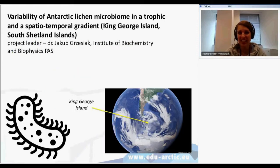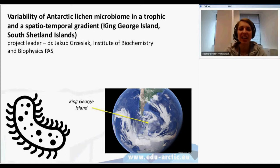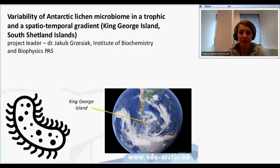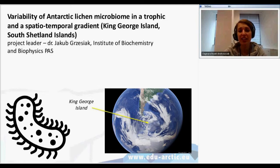The first one is the name of the scientific project that is still being carried out in South Shetland Islands. It is the archipelago where King George Island is located. It is the Antarctic — the big territory in the southern hemisphere which contains the continent of Antarctica and the surrounding islands, which means King George Island as well.